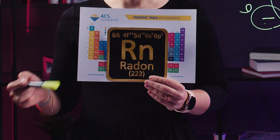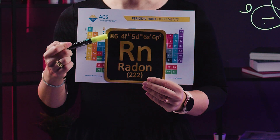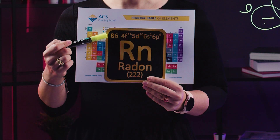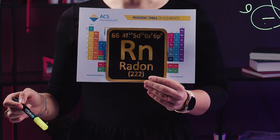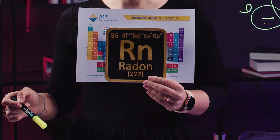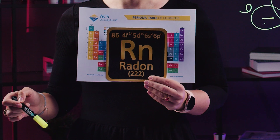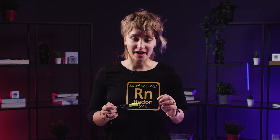For example, radon is the 86th element, meaning a radon atom always has 86 protons. Another important number is atomic mass. In this table, the atomic mass of radon is 222.